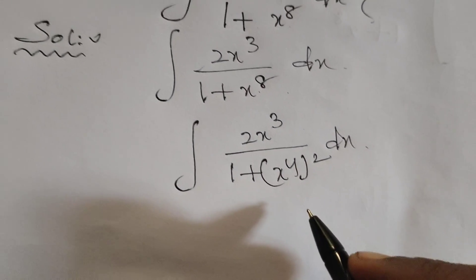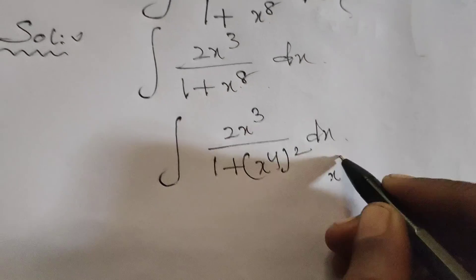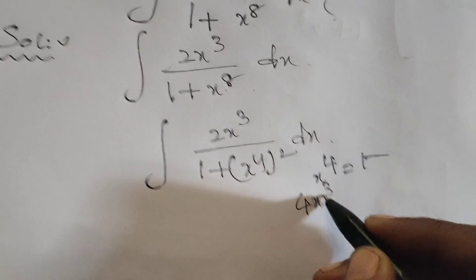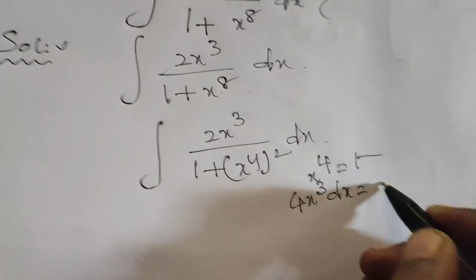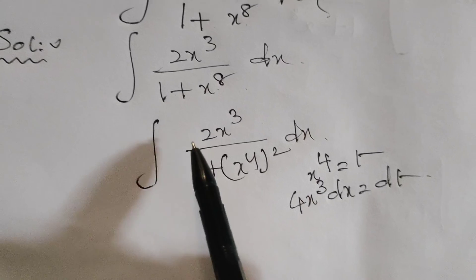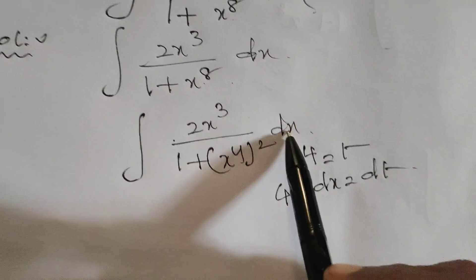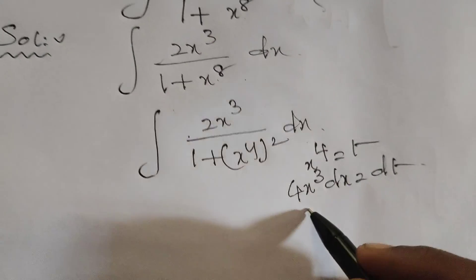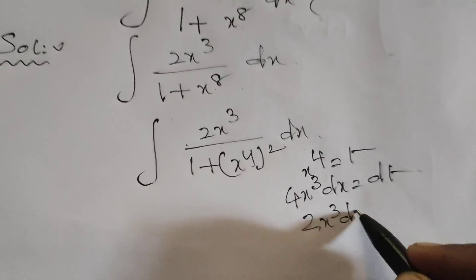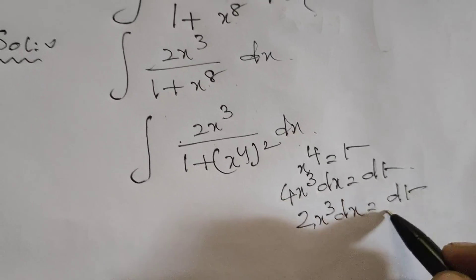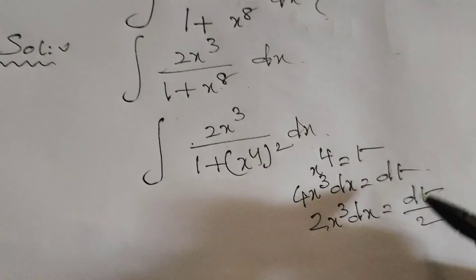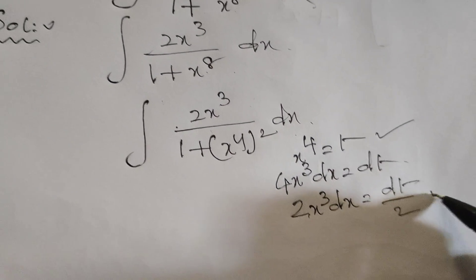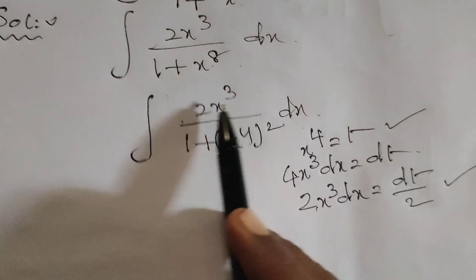Our substitution is x to the power 4 equals t. Differentiating this, we get 4x cubed dx equals dt. In this problem, we need 2x cubed dx, so we arrange to get 2x cubed dx equals dt divided by 2.